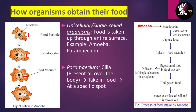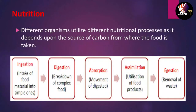The food is taken in the form of food vacuoles. Inside the food vacuoles, digestive juices are added which digest the food, and all nutrients are absorbed. The undigested waste material is moved to the surface of the cell and thrown out. In paramecium, the difference is that it has cilia all over the body and has special spots from where it can take in food.